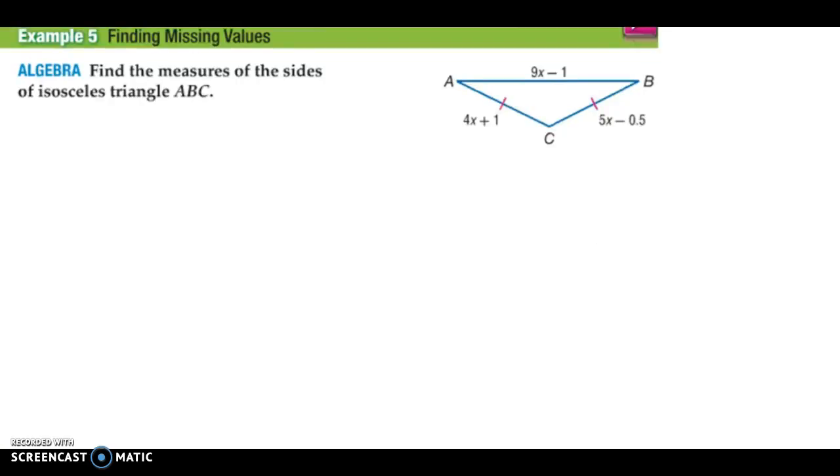Example 5. Now, we can use the given information that we know to find the missing value or missing side of a triangle. If we look at triangle ABC, we'll see that we have three different sides, all of them containing the variable X. We have to find the value of X before we can find the length of the side. So it says, find the measure of the sides of the isosceles triangle ABC.